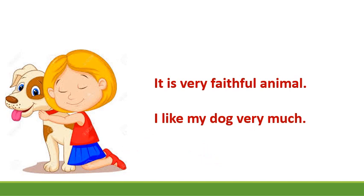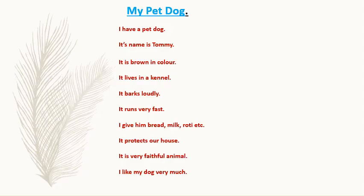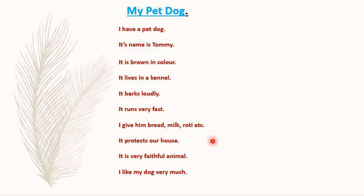Now we'll write the full composition here. My Pet Dog: I have a pet dog. Its name is Tommy. It is brown in color. It lives in a kennel. It barks loudly. It runs very fast. I give him bread, milk, roti, etc. It protects our house. It is a very faithful animal. And I like my dog very much.